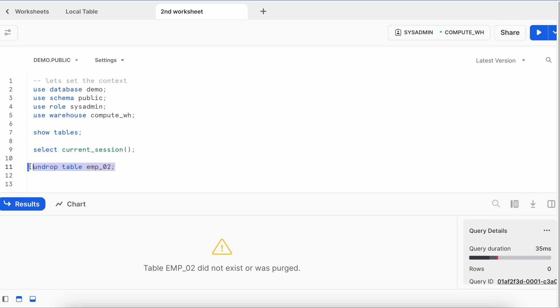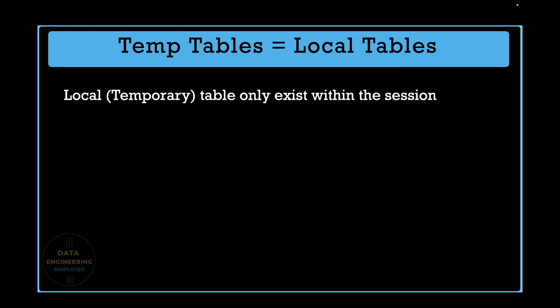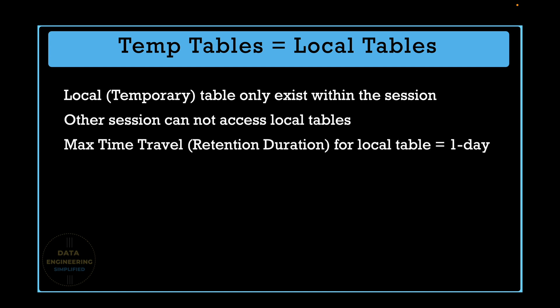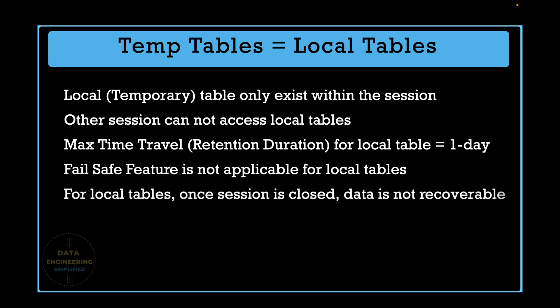In summary, a local table equals a temporary table in Snowflake. The LOCAL classifier is a synonym and abbreviation for TEMPORARY, provided for compatibility with other databases to prevent errors when migrating CREATE TABLE statements. Key features and limitations: local/temporary tables exist only within the session; other sessions cannot access them; max time travel retention is one day; the Failsafe feature is not applicable; and once the session is closed, data is not recoverable — however, within the same session, data can be recovered.